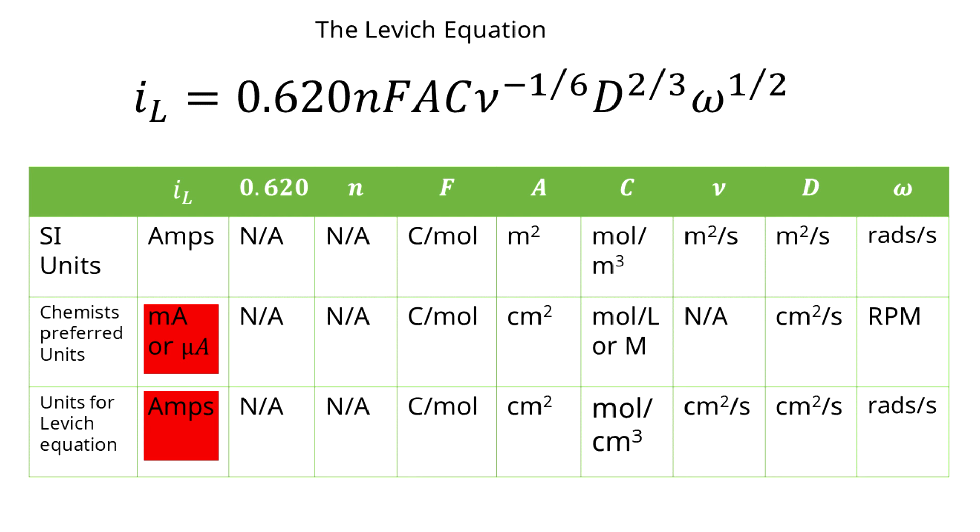The first is the limiting current. Typically, when electrochemists make measurements using RDE, they are working with small quantities of redox molecules. The resulting current tends to be in the micro or milliamp range, but the Levich equation is in amps. So make sure that you convert your micro or milliamps to amps when performing calculations.